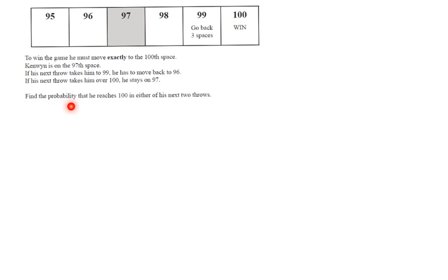What is the question? Find a probability that he reaches 100 in either of his next two throws. Okay, so that could be in his first throw that he wins or exactly gets to 100 or in his second throw. That's going to be in either of his next two throws. All right. So I'm just going to, I'll try to structure the workings as good as I can.